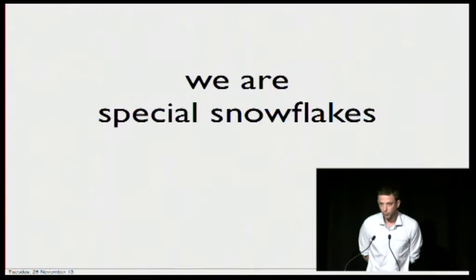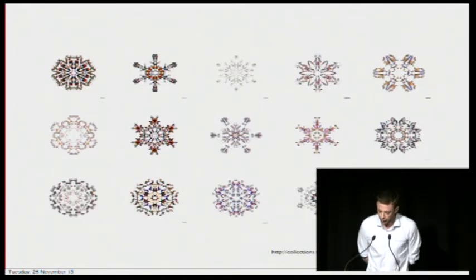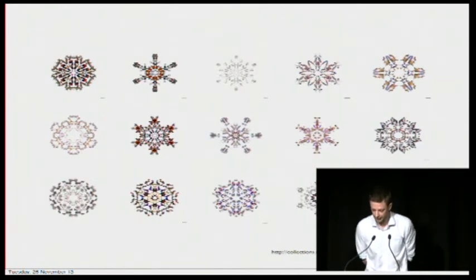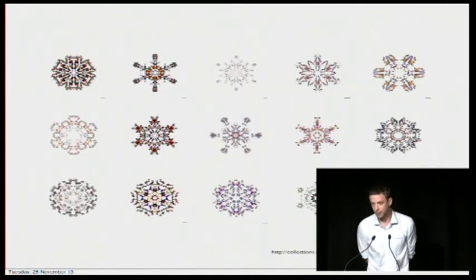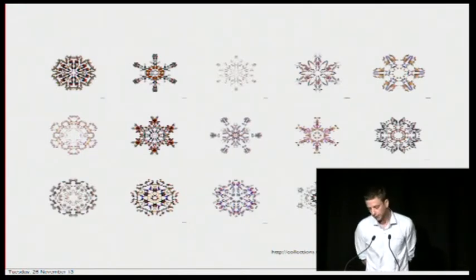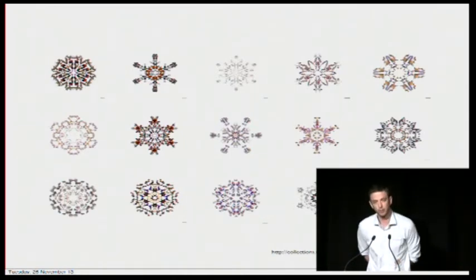The second principle is that our institutions, collections and practices are incredibly diverse. Just a few of the ways that we differ include our descriptive practices, the technical systems we use to manage our data, our metadata formats, where our staff's expertise lie, our institutional histories, our responsibilities and governance structures, the audiences that we serve, and the budgets that we operate within. This heterogeneity is inevitable and probably also desirable, but it poses significant challenges to linking data, because it takes a lot of work for dissimilar collections to be able to talk to one another.